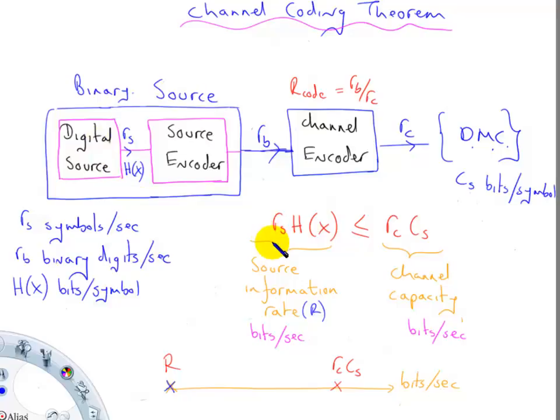Shannon's channel coding theorem is basically that the source information rate, RS multiplied by H of X, if the source information rate is less than the rate at which information can be transferred across here. I have RC symbols per second coming through here, I've got CS bits per symbol, so the channel capacity or the maximum rate at which information can go through here is RCCS.